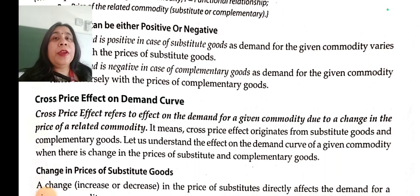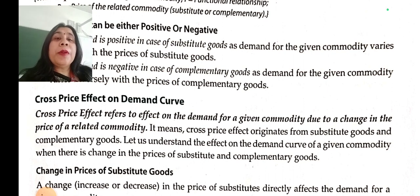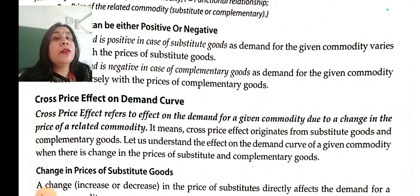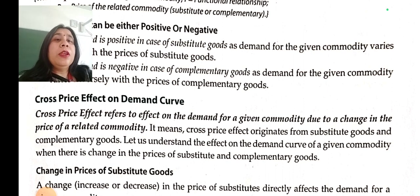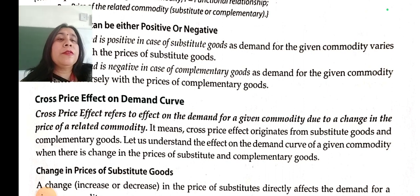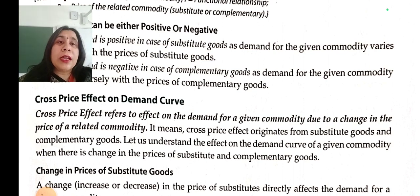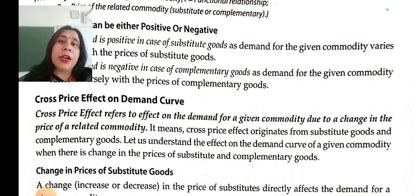Cross price effect on the demand curve — what happens to the demand curve with this cross price effect? This cross price effect refers to the effect on the demand curve of a commodity due to the change in the price of the related commodity. For example, demand for the ball pen will increase or decrease with the change in the price of a gel pen. This cross price effect originates from substitute goods as well as complementary goods.